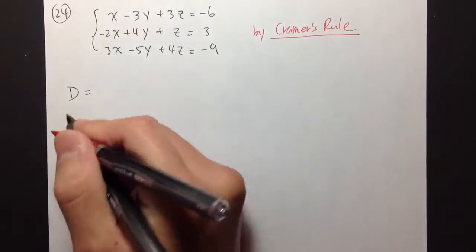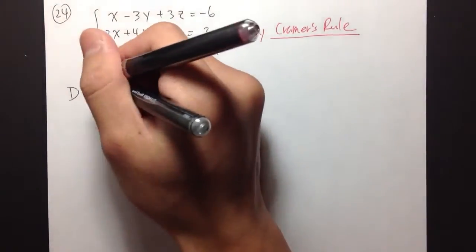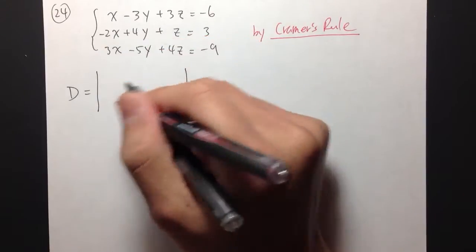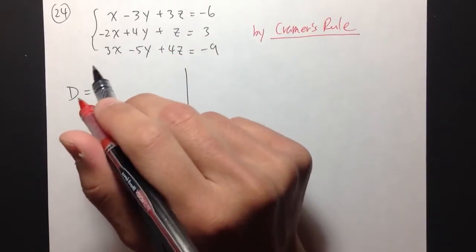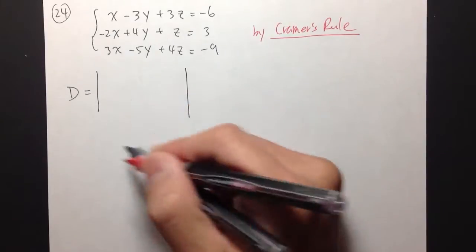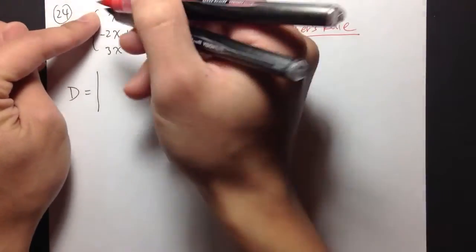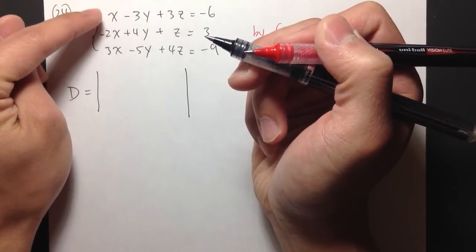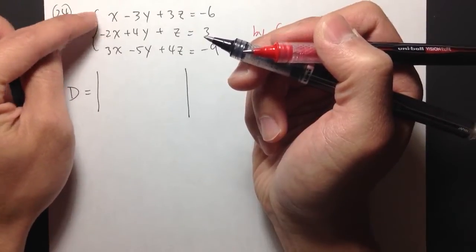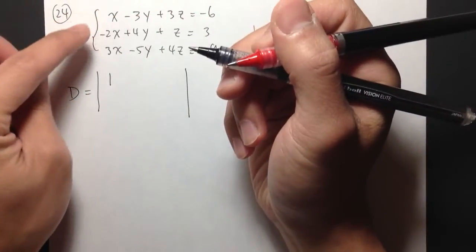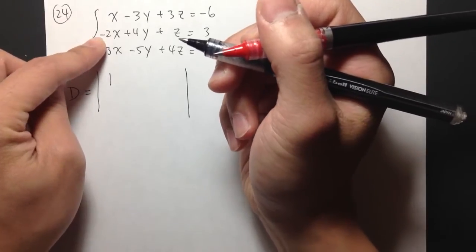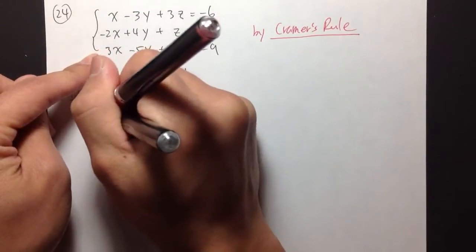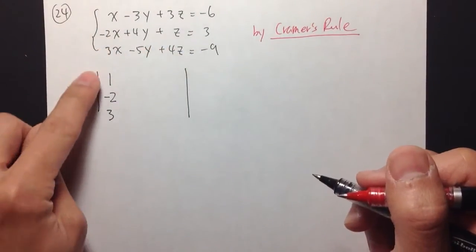The first thing we are going to do is create a matrix called D. D is built from the coefficients of x, y, and z from the system of equations. We take the coefficients and put them into a matrix. For x, the first equation is 1x, so I write down the coefficient 1. Then the second row is negative 2, and the third row is 3.